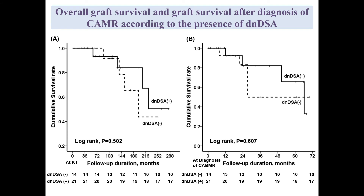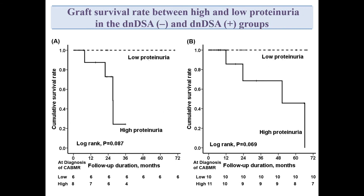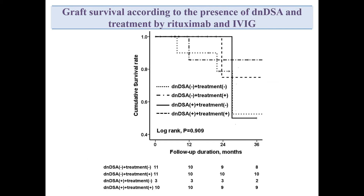Overall graft survival and graft survival after diagnosis of CAMR, according to the presence of de novo DSA, showed no significant differences. Graft survival rate was lower in the high proteinuria group than in the low proteinuria group in both no-detectable DSA and detectable DSA groups respectively. There was no significant difference in the graft survival rate between the two groups regardless of treatment.